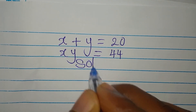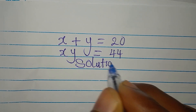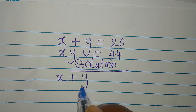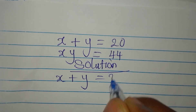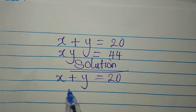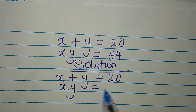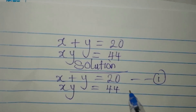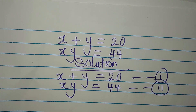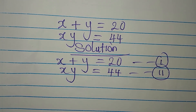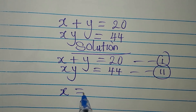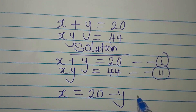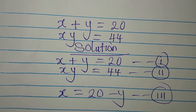Hello everyone and welcome to Foucault Mathematics. We have x plus y equals 20 — this is equation 1 — and xy equals 44, which is equation 2. From equation 1, we can make x the subject, giving x equals 20 minus y. Let's call this equation 3.